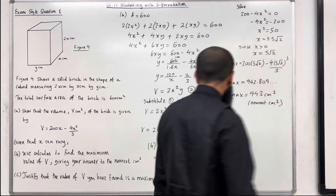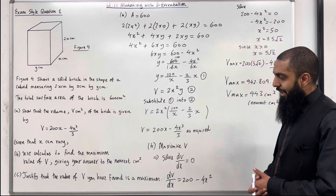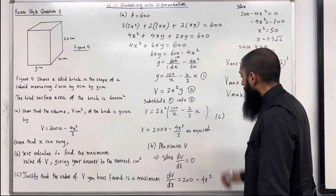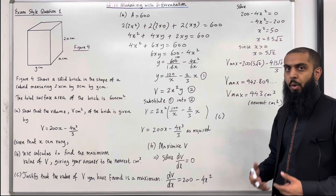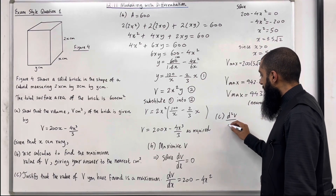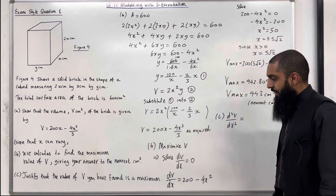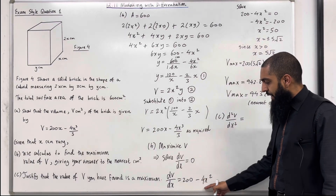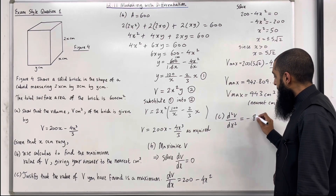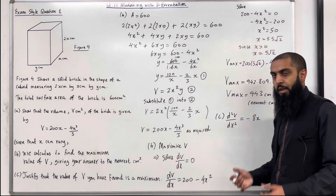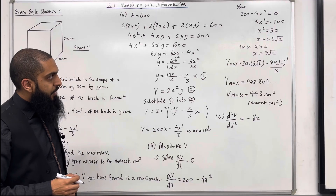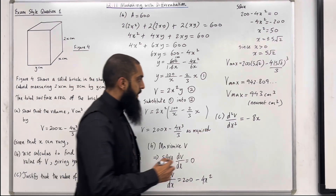Let's move on to Part C. We need to justify that the value of v found is a maximum. In Part C, we use a second derivative test. We have to work out d²v over dx². We've got dv over dx which is 200 minus 4x squared, so differentiating that gives minus 8x. That is the second derivative.